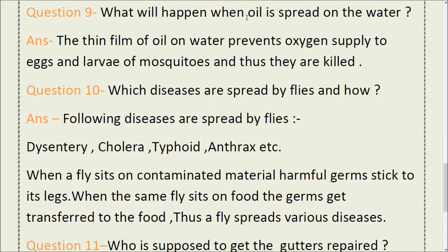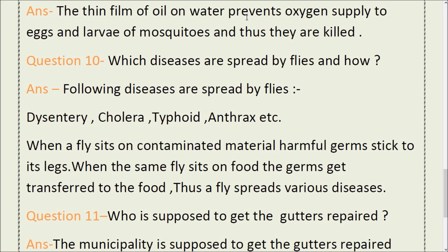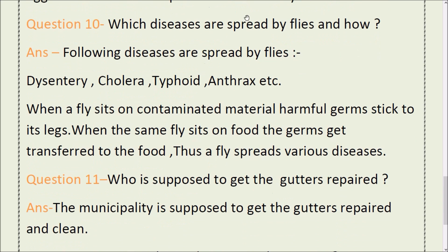Question number 10: Which diseases are spread by flies and how? Answer: The diseases spread by flies include dysentery, cholera, typhoid, and anthrax. When a fly sits on contaminated material, harmful germs stick to its legs. When the same fly then sits on food, the germs get transferred to the food. Thus, flies spread various diseases.